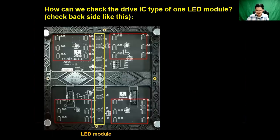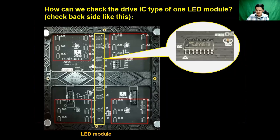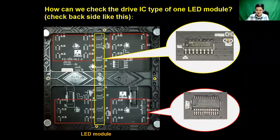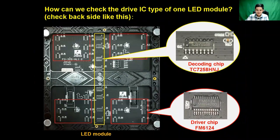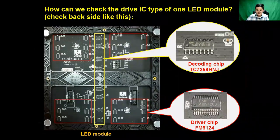We can check and read the backside of one LED module — it is very easy. You can read the backside information, which is generally printed on the IC. You can read it clearly. For example, the decoding chip reads TC7258 HNJ, and the driver IC reads FM6124.